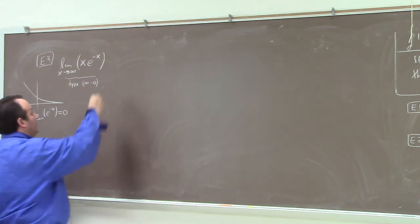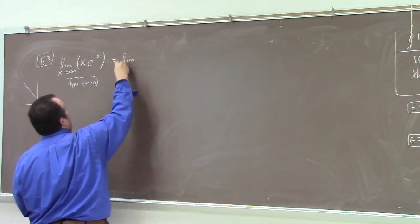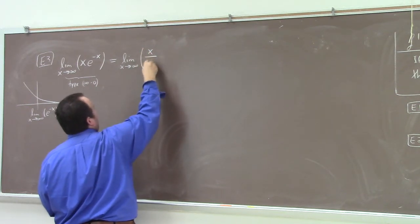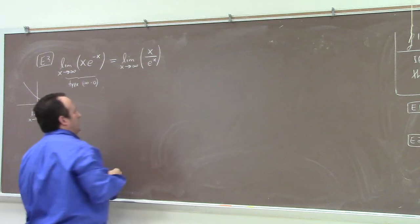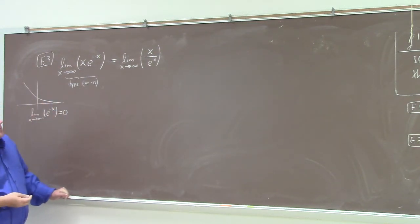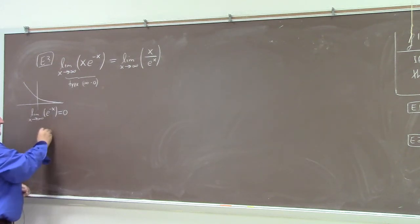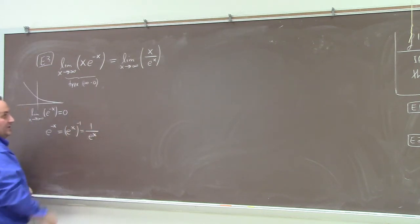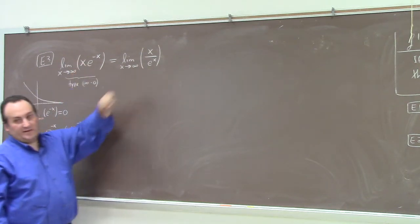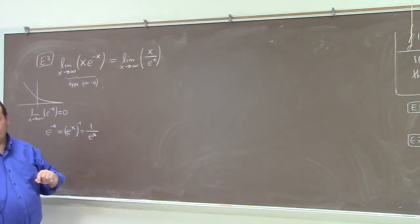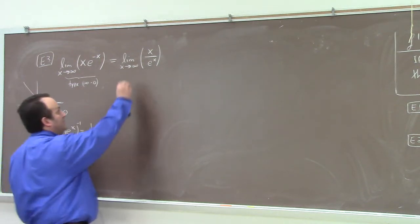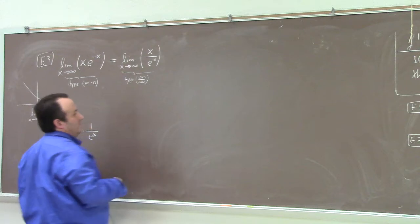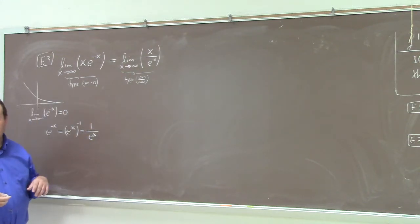But here's the trick. We can rewrite this. And by the way, this is a problem we could not have settled before L'Hôpital's rule. This problem requires L'Hôpital's rule, or some rather sophisticated analysis. So, notice that e to the minus x is equal to e to the x to the minus 1, which is 1 over e to the x. So I can trade e to the minus x for 1 over e to the x.